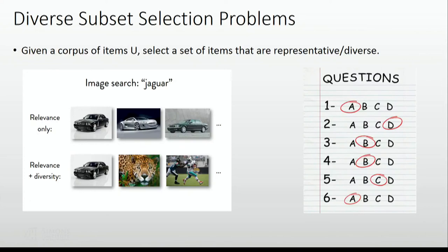The problem I want to look at is to find a subset from a big corpus which is somewhat representative and diverse. For example, in an image search, if you really want just relevant images, these are the kind of images you would like to pick. But if I really want to pick images which are more diverse, which have different kinds of jaguars in some sense, that's the kind of thing I would like.